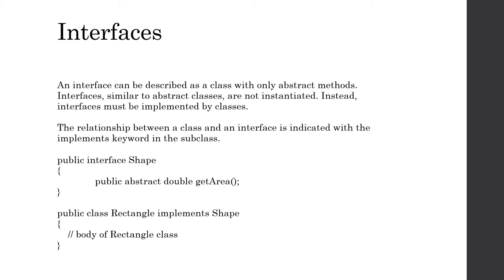Transitioning away from classes and abstract classes, we're going to start looking at interfaces. An interface can be described as a class that only consists of abstract methods. Interfaces, similar to abstract classes, cannot be instantiated for the exact same reason — if you tried to construct an object with an interface, you'd still have abstract methods with no implementation, so calling one of those methods wouldn't work.